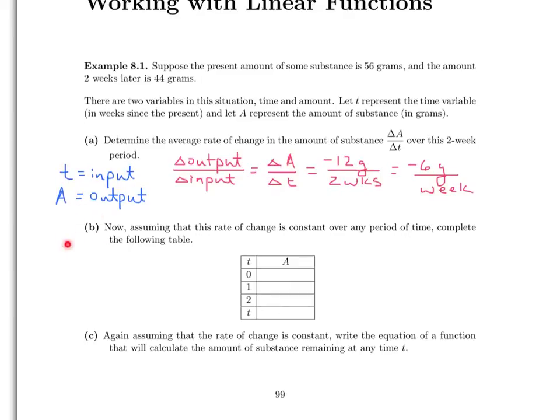Let's go ahead and look at Part B. Now, assuming that this rate of change is constant over any time period, not just the two-week period that we were talking about above, let's complete the following table. I'm going to go ahead and make two changes in the table. Let's not do this for time 2 and time t, but rather let's do this for time 4 and time 7 instead. So now let's complete this table. Time 0 refers to the initial time, which we can think of as the present time. And at the present time, there are 56 grams of substance.